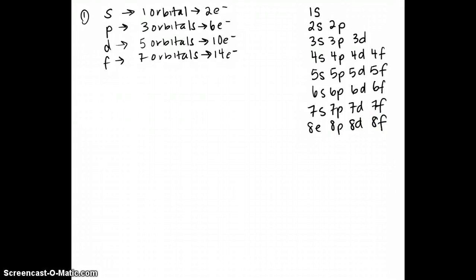The other thing that is important is to remember the direction in which they are filled. We always fill in the diagonal. We fill the 1S first, then the 2S, then the 2P, then the 3S, then the 3P, and then the 4S, and then the 3D, the 4P, and the 5S, 4D, 5P, and 6S, 4F, 5D, 6P, 7S, and so on.